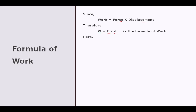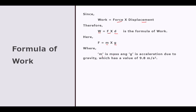What if force is not given? We know that force is equal to mass into g — mass into acceleration due to gravity. Here M is the mass and g is the acceleration due to gravity. The value of g is not fixed but on Earth we take it as 9.8 meters per second squared, or approximately 10 meters per second squared. So we can also write the formula of work as W = M × g × D if the force is not given but the mass and displacement are given.